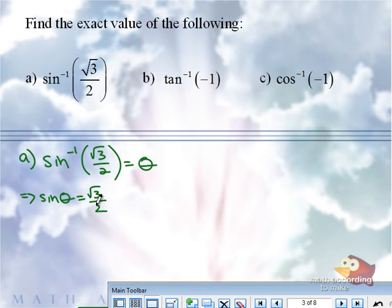what angle between negative pi over 2 and pi over 2 has a sine value of radical 3 over 2? I know you're excited, but you are correct, but I'm going to say it again so that everyone can do this. What angle between negative pi over 2 and pi over 2 has a sine value of radical 3 over 2? That's what you ask yourself.